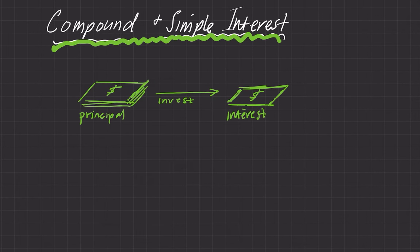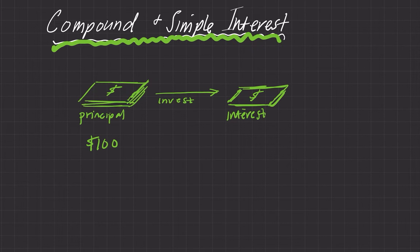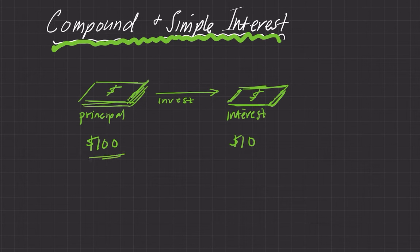What simple interest does is it just gives you that interest at the end of some cycle. So if your principal was $100 and you have simple interest of 10%, that would give you $10. And if you had that $100 just sitting there in that account, every year you get $10 — it never changes. That's simple interest.